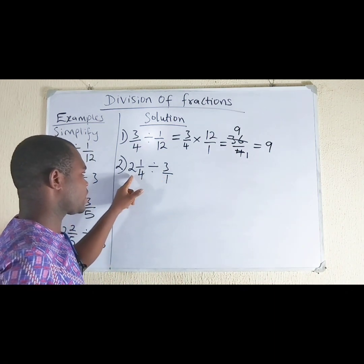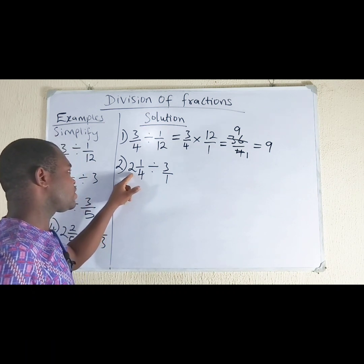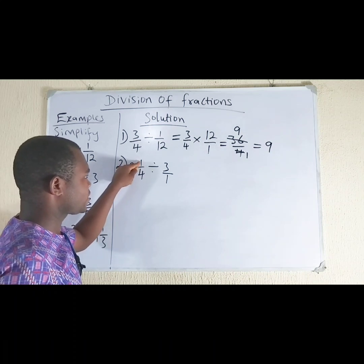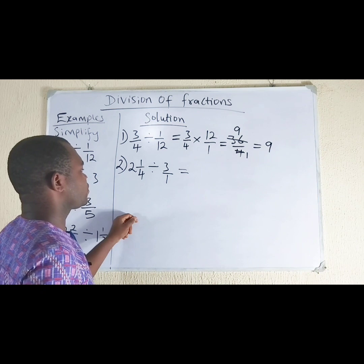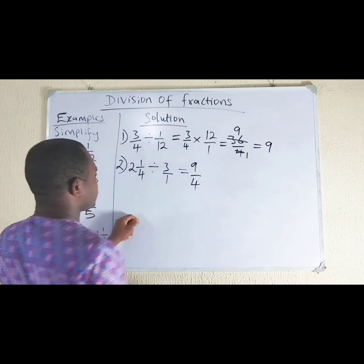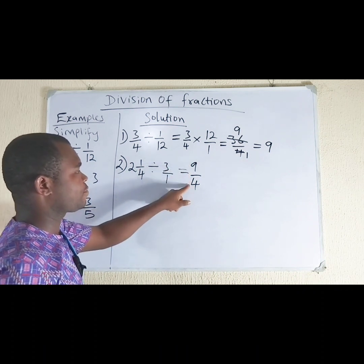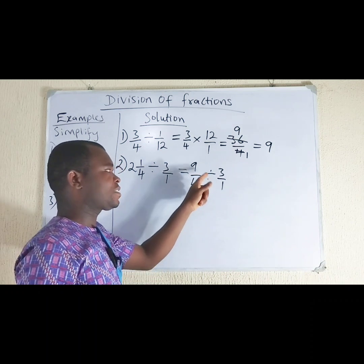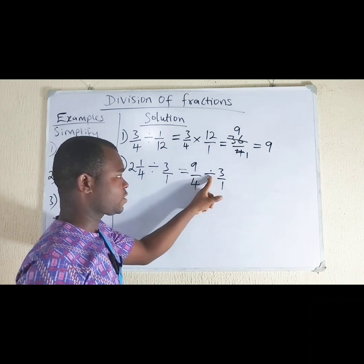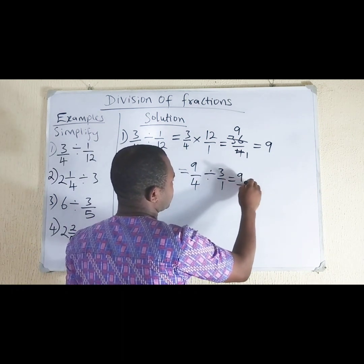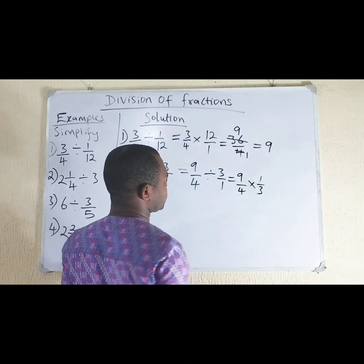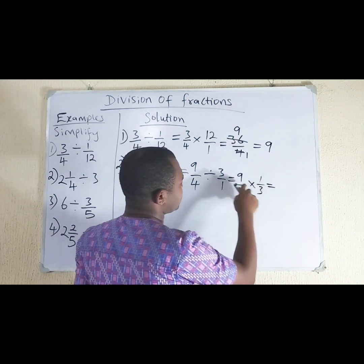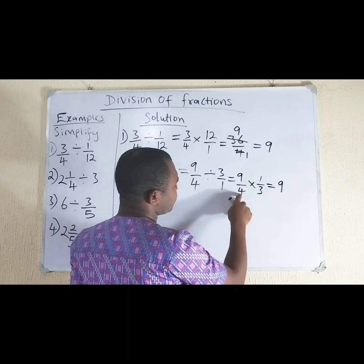It is now a fraction. For us to solve this, we need to change the mixed number into an improper fraction. So, 4 times 2 is 8, plus 1 gives us 9. We change this to 9 over 4, divided by 3 over 1. We now invert it and change the division sign into a multiplication sign. So, 9 times 1 is 9, and 4 times 3 is 12.